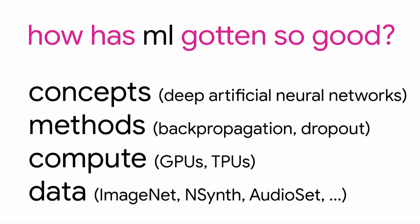So why has there been this progress? Part of it is new concepts like deep artificial neural networks, different methods for actually training these models, and compute power — people figured out how to use graphical processing units, which were originally invented for video gamers, to repurpose them to solve these problems really rapidly. Now there are custom chips like TPUs being developed at Google that are specifically made to make machine learning models run very rapidly. And lastly, very importantly, is data — the huge datasets we have now in digital format that we can train on.